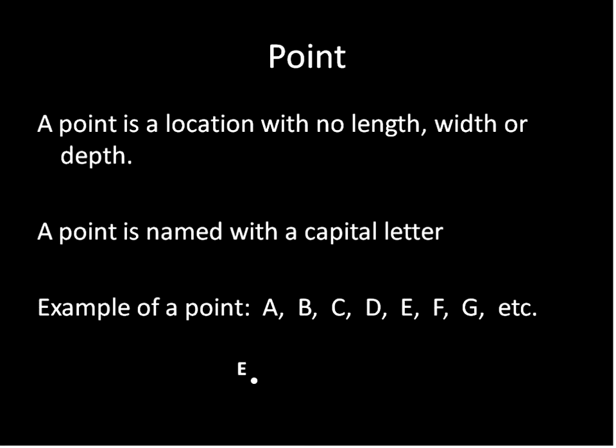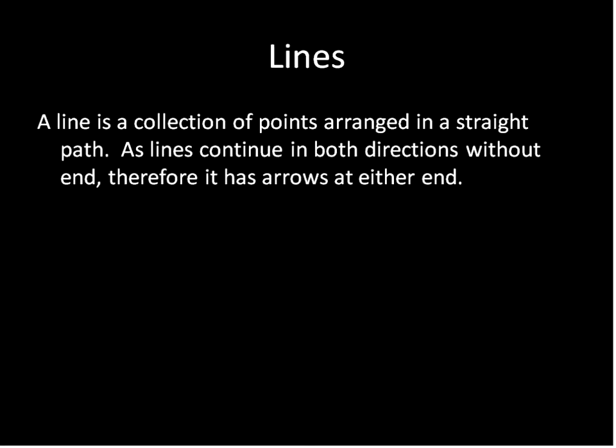Now if you have a series of points and they're all in a straight trajectory, then we call that a line. It's a collection of points arranged in a straight path and the line will continue in both directions without any end.